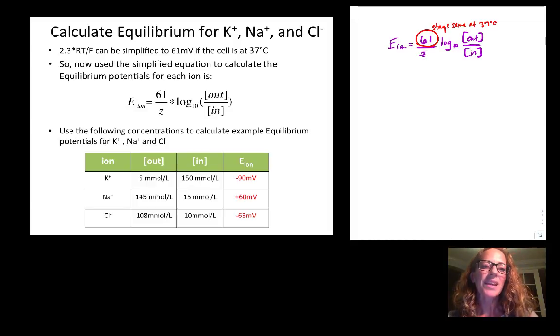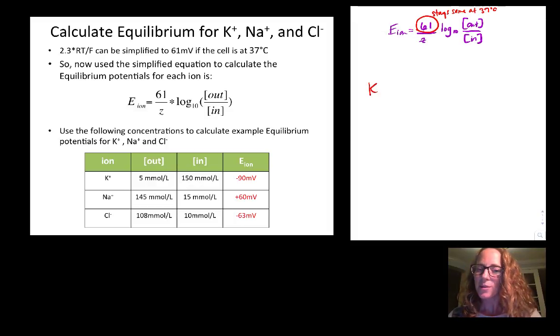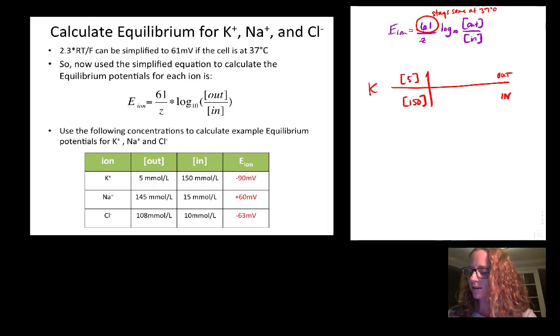All right, now let's try some calculations for potassium, sodium, and chloride. Let's start with potassium. Typical values for potassium would be around 5 millimoles per liter outside and 150 millimoles per liter inside. Pause to put those in and you should get minus 90.